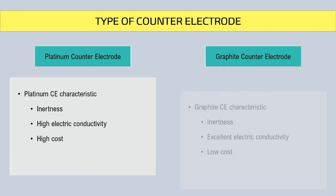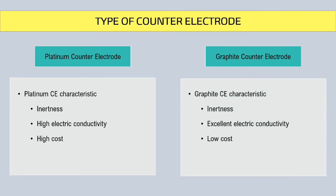Graphite is relatively inexpensive but also has excellent electrical conductivity and inertness, making it a great candidate to be used as a counter-electrode.